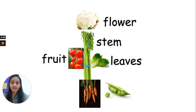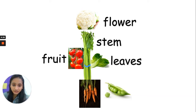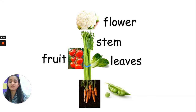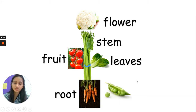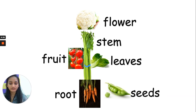Then you also have the lettuce, which is the leaves of a plant. You have one leaf, and many leaves. So the lettuce are the leaves of a plant. Then you have the root — can you see the carrots growing underground in the soil? That's the root of a plant. And finally we have the peas. They are the seeds of a plant.